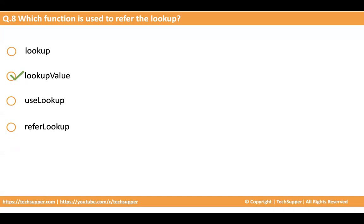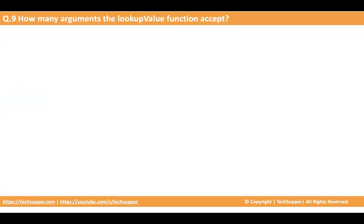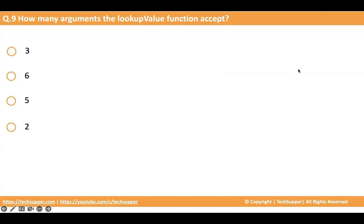The next question: how many arguments does the lookup value function accept? When you use the lookup value function you have to provide input arguments. If you don't know, try using the lookup value function and see how many arguments it takes. The options are 3, 6, 5, or 2. The correct answer is 5.